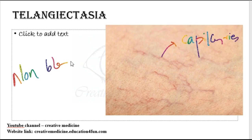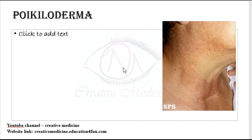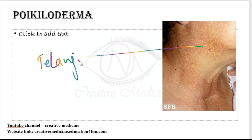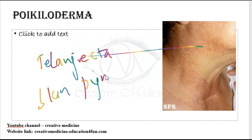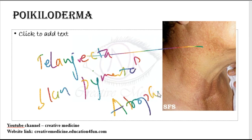Poikiloderma. Telangiectasia, skin pigmentation, and atrophy together is called poikiloderma.